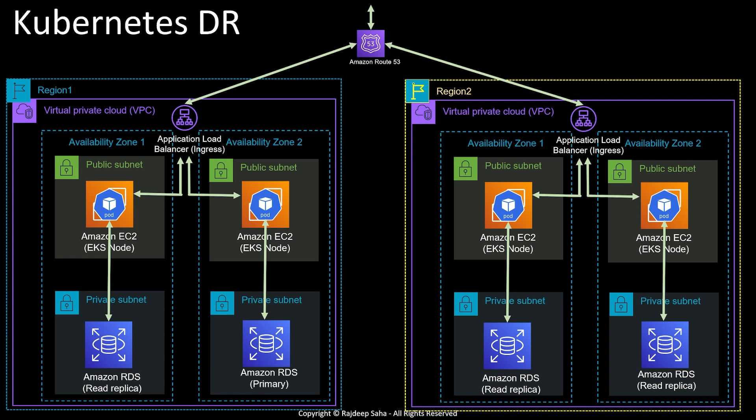In Amazon Route 53 you specify a routing policy and you can use failover. Route 53, using DNS, can sense that region one is down and will start sending traffic to region two. Keep in mind that with this routing policy, traffic will not be split between the two regions when both are up and running — it will only switch over in case one region fails.